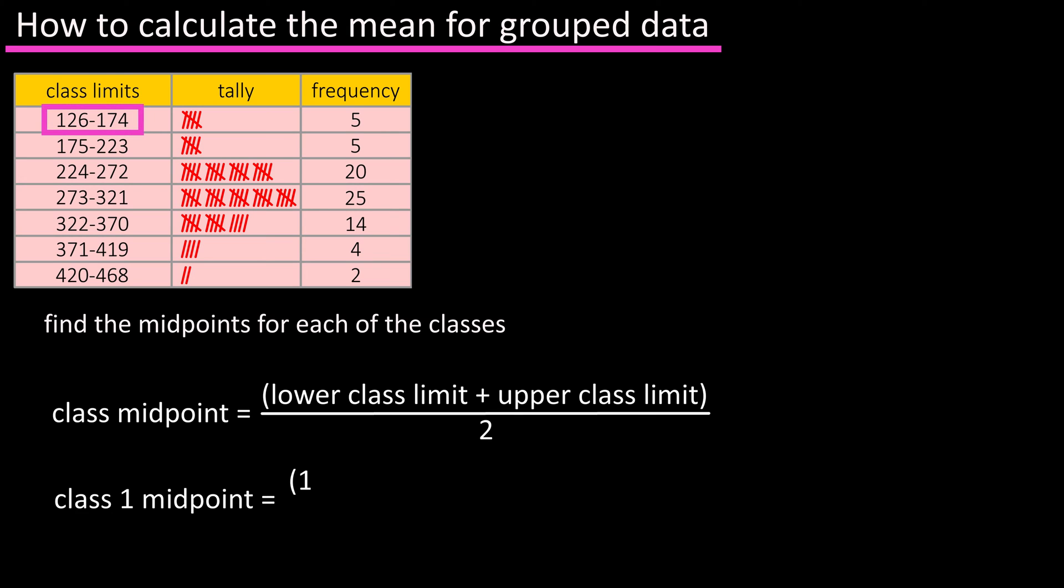So for class one the lower limit is 126, add that to the upper limit of 174 to get 300, and divide that by two, and we get 150 as the midpoint for class one.